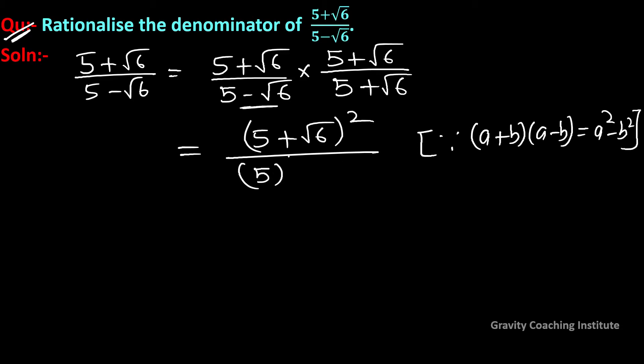The denominator becomes 5² - (√6)², which equals 25 - 6. For the numerator, we will now use the (a + b)² identity.